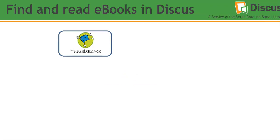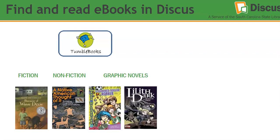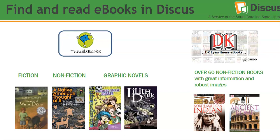You can also find and read ebooks in Discus, either for school or for personal interest. Tumble Books has sixth grade level books on fiction, non-fiction, and graphic novels. If you're doing research on a non-fiction topic such as North American Indians, Ancient Rome, or the Solar System, the DK Eyewitness books has over 60 non-fiction books with great information and robust images just for you. Simply go to the middle school list and look in alphabetical order to locate DK Eyewitness books or Tumble Books.